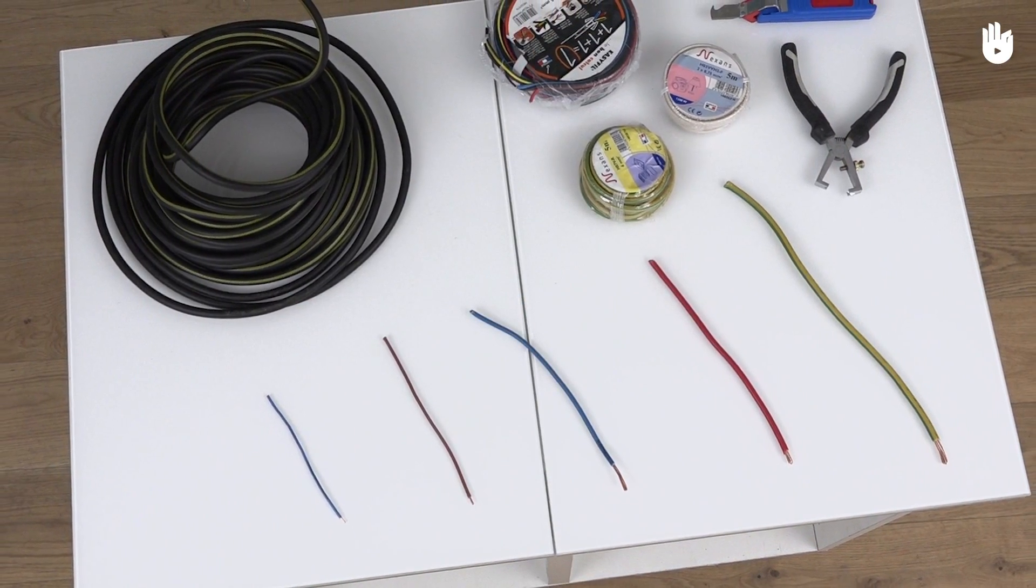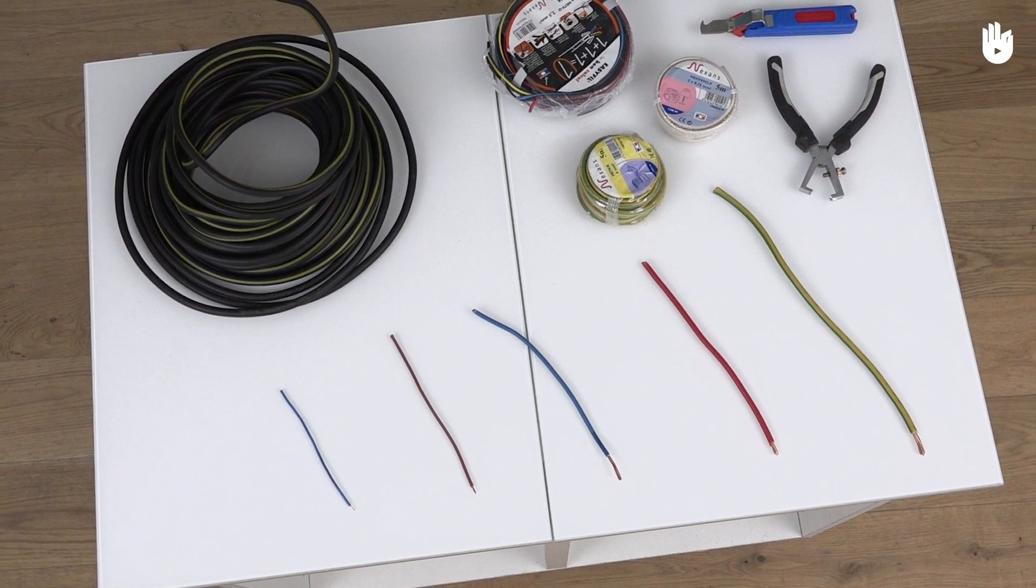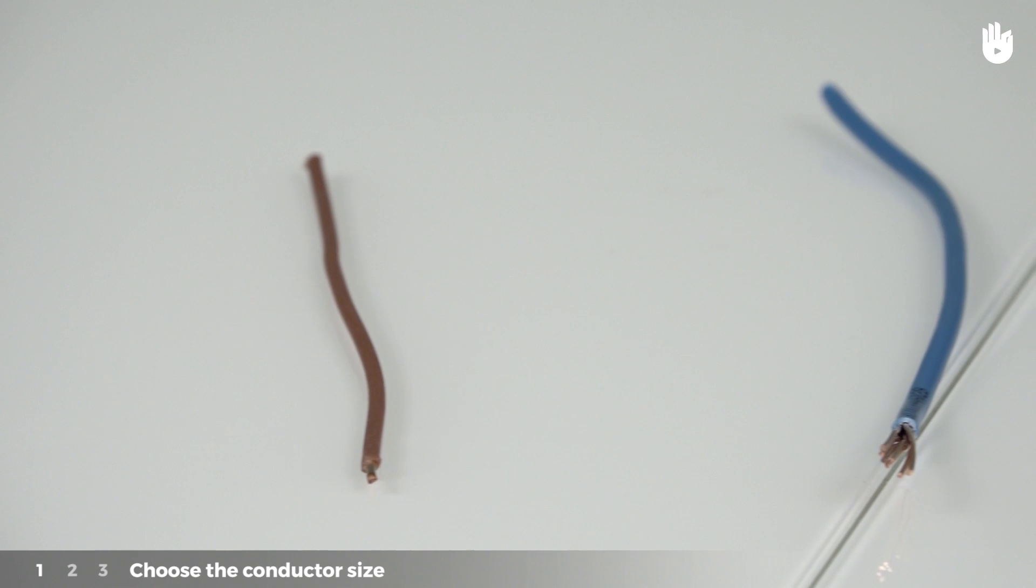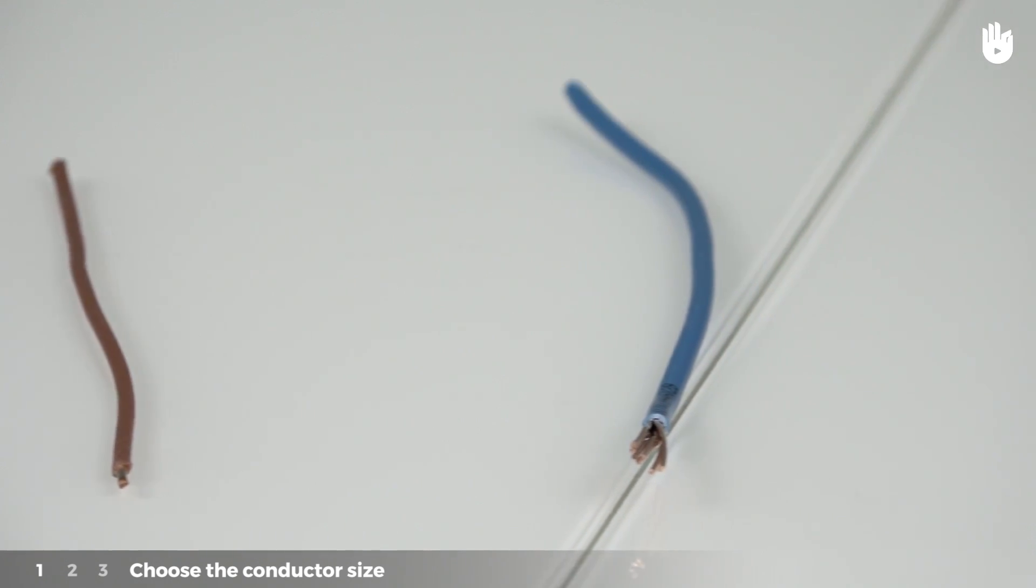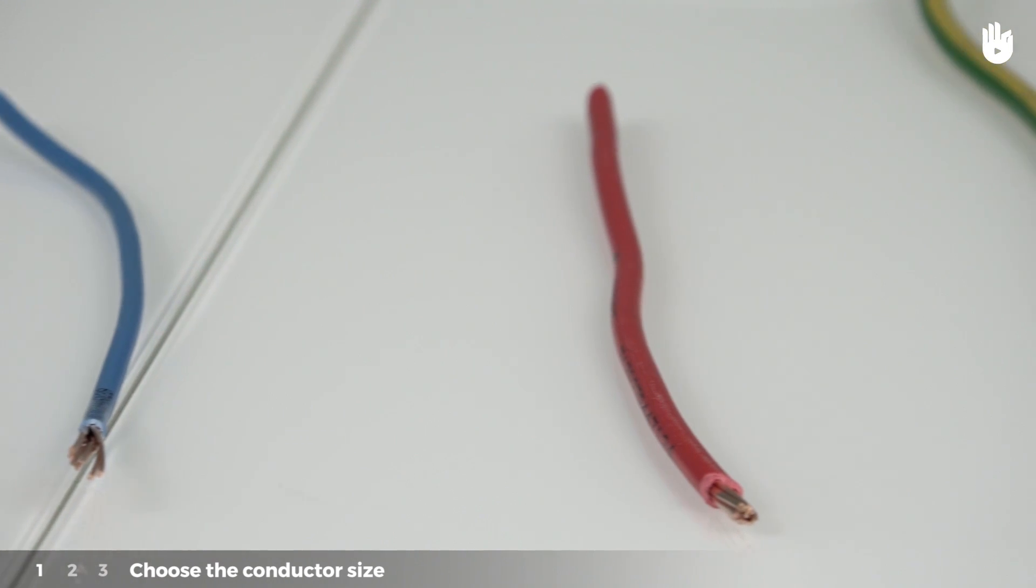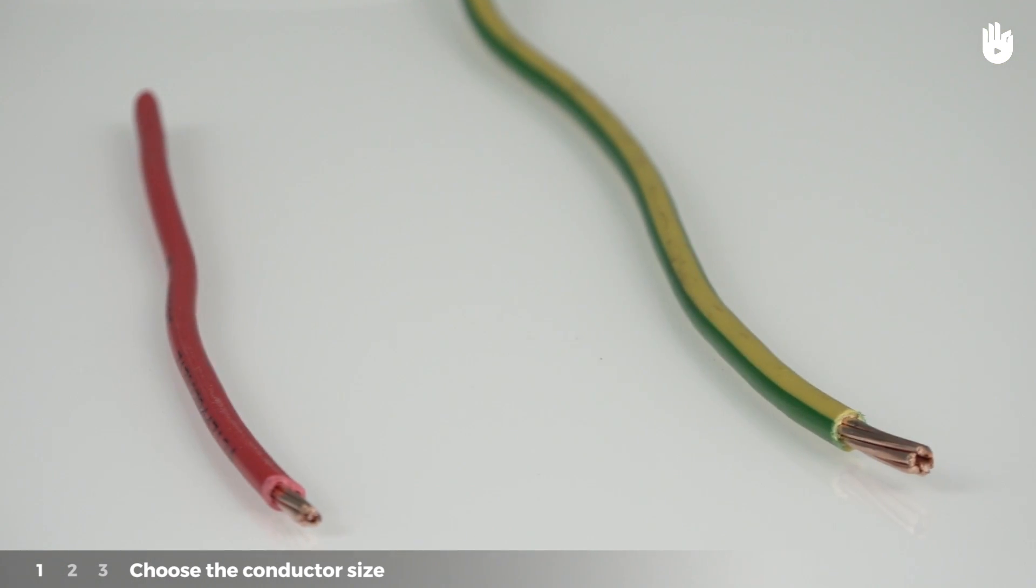This operation is carried out in three steps, which we will explain. Step 1: Choose the conductor size. The cross-section of the conductor, also referred to as its diameter, is selected by the current it is used for, i.e. the maximum load allowed for the circuit.